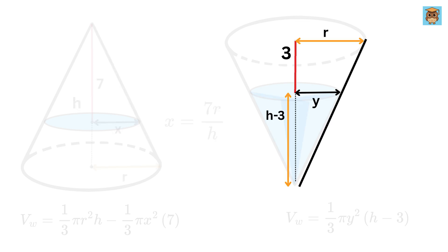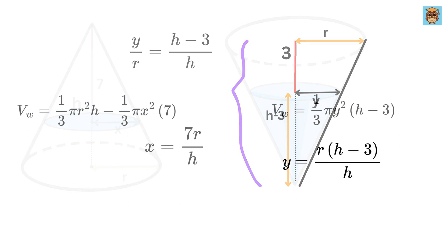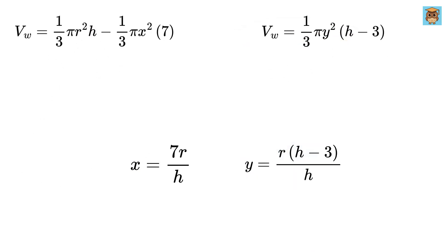Similarly, for this cone, we can say that this side or Y over this side or R is equal to this side or H minus 3 by this side or H. Thus, we get Y equals H minus 3 times R over H. Let us substitute the values of X and Y in terms of R and H here and solve for H.